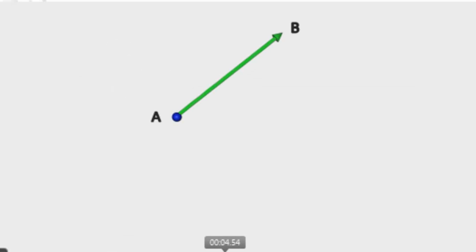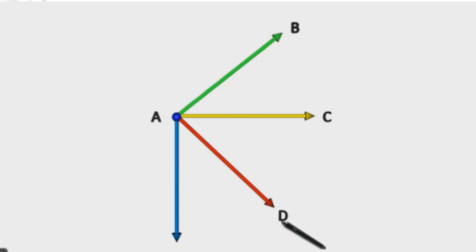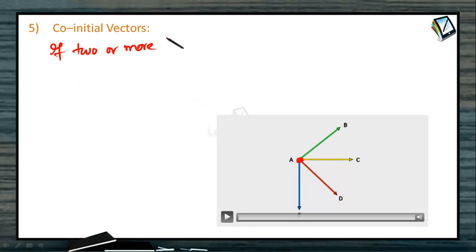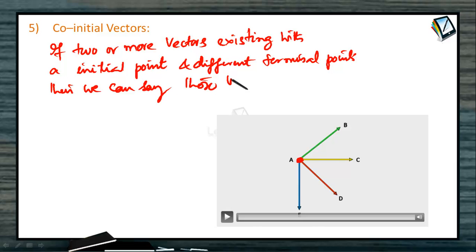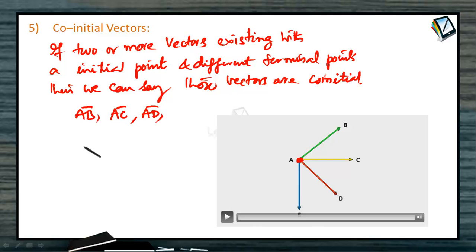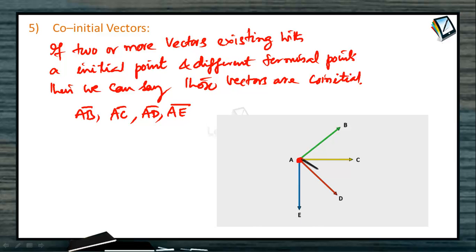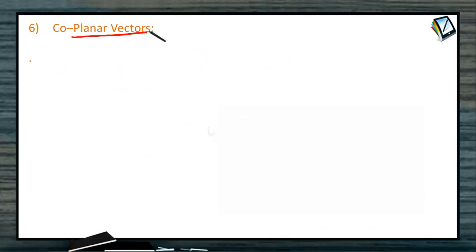Next, co-initial vectors. Observe this animation: if A is a point, and AB-bar, AC-bar, AD-bar, and AE-bar are all vectors, then for all four vectors the initial point is A. Since two or more vectors have the same initial point but different terminal points, we say those vectors are co-initial. These co-initial vectors can also be coplanar.